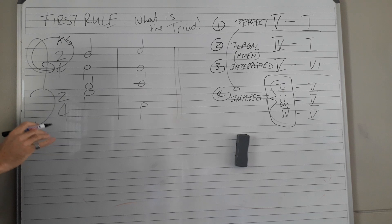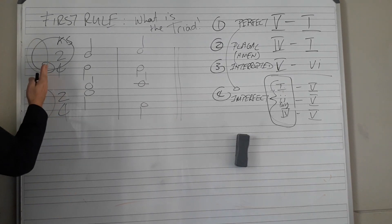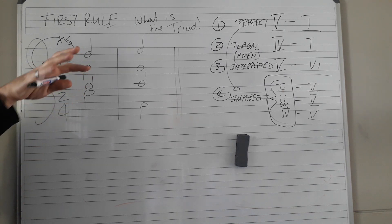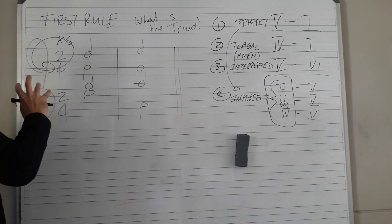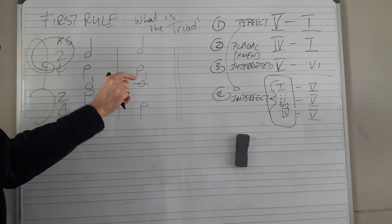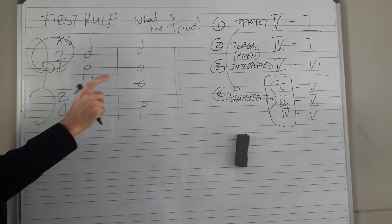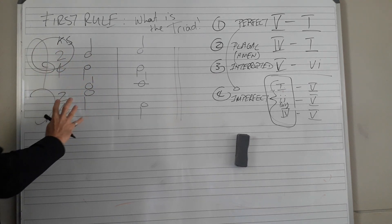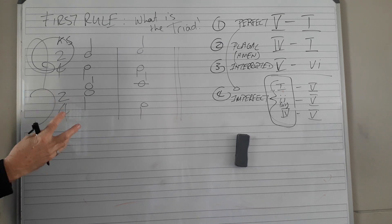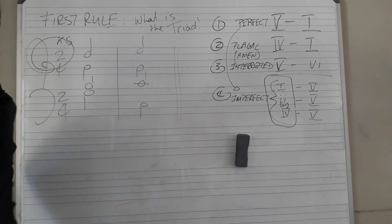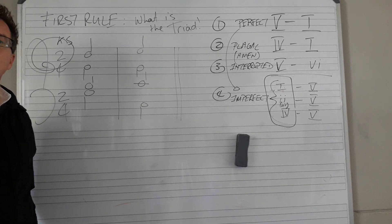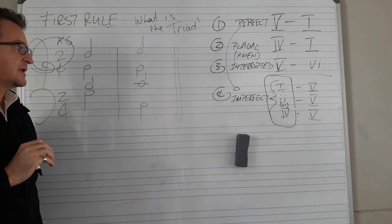There's another aspect here—what key am I in? You look here for the key signature, and there's nothing there. So you've always got two options: major and minor. Could be C major or A minor. If it's a minor key, there's a thing that happens that makes a difference. What is that? The raised seven.